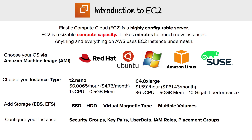EC2 is highly configurable, so what are some of the options? Well, you get to choose an Amazon Machine Image, which includes your OS — whether you want Red Hat, Ubuntu, Windows, Amazon Linux, or SUSE. Then you choose your instance type, which determines how much memory you want versus CPU.